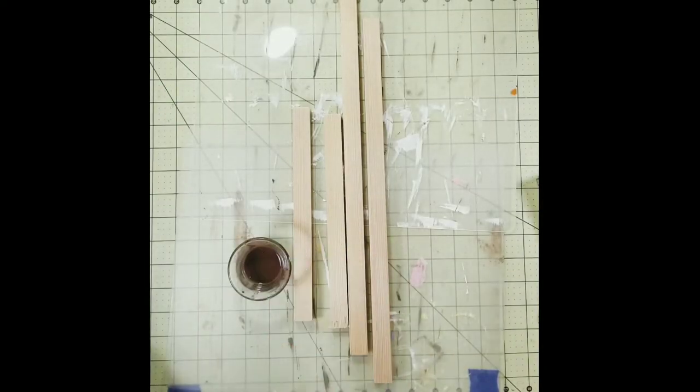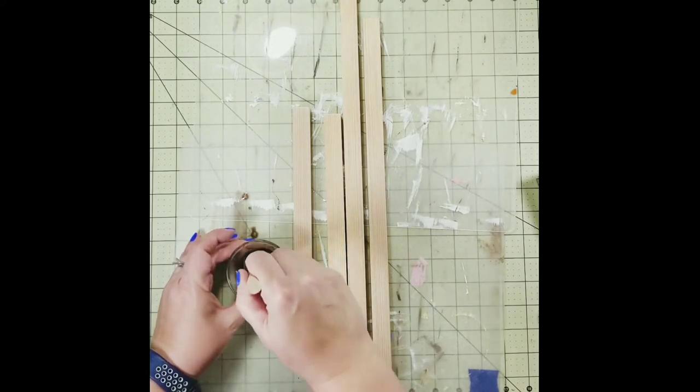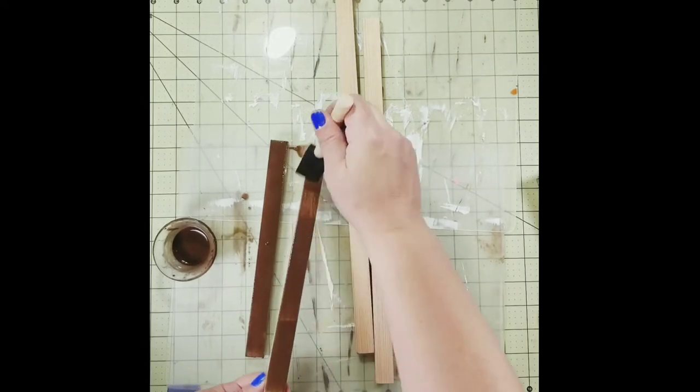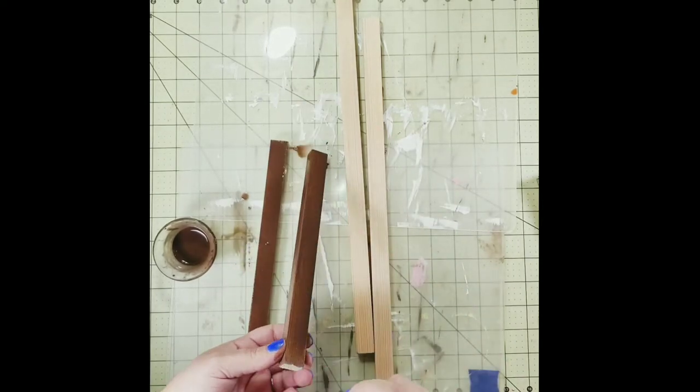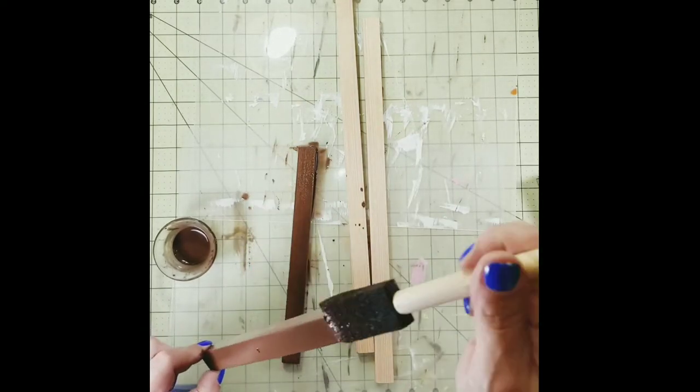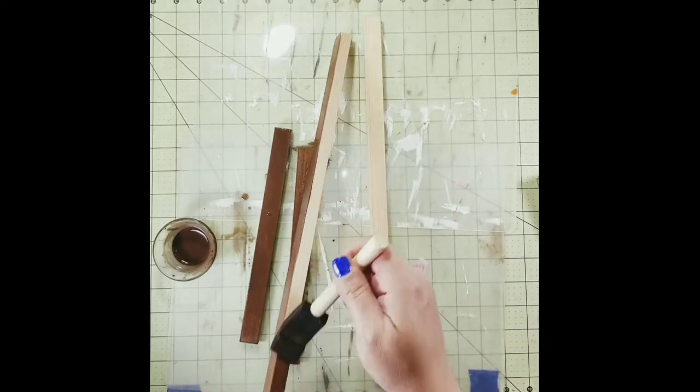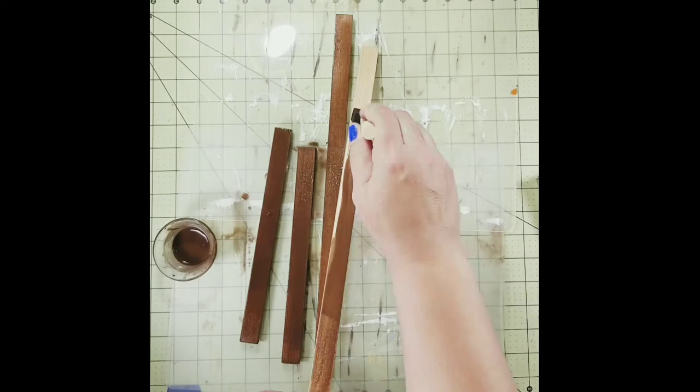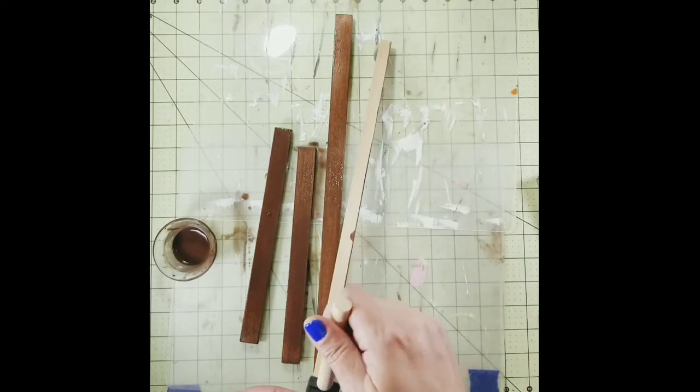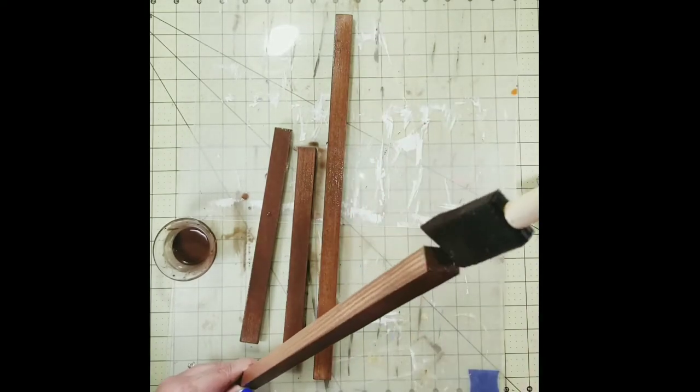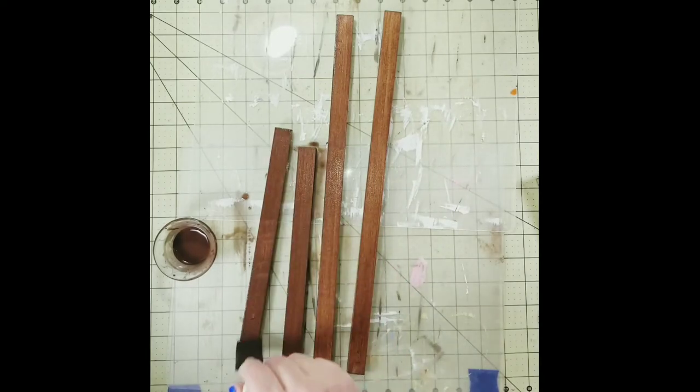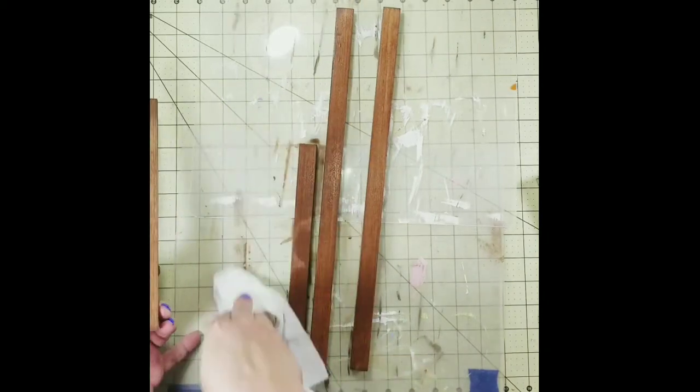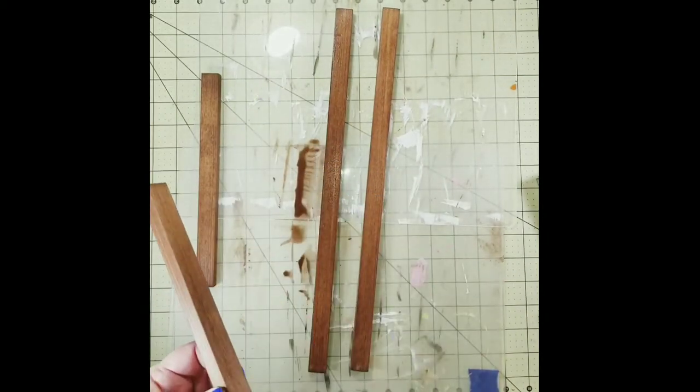After that, we're going to use that same wood wash technique on these pieces as well. I'm just doing three sides because that fourth side will be glued down to the sign and you'll never see it, but I do make sure to get my ends because you'll see some of those. I'm also taking that paper towel and wiping off any excess so that that wood grain shows through nicely.